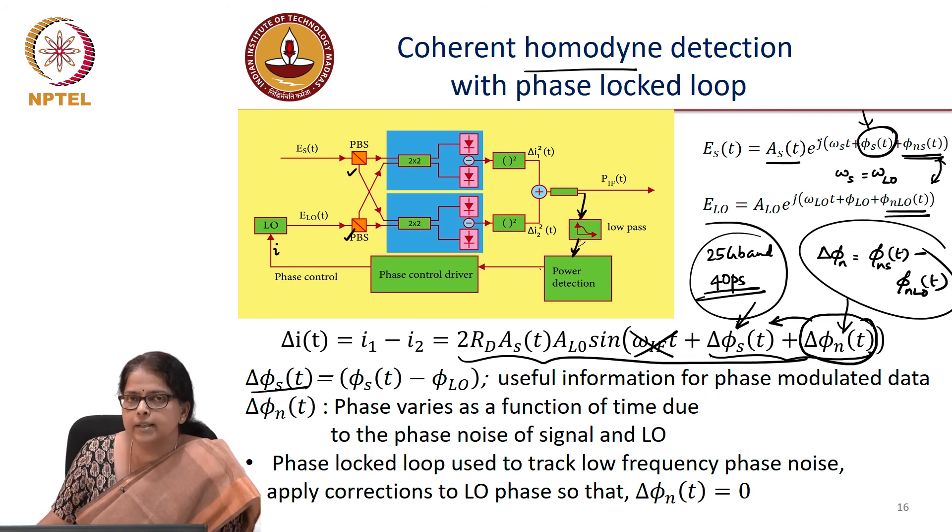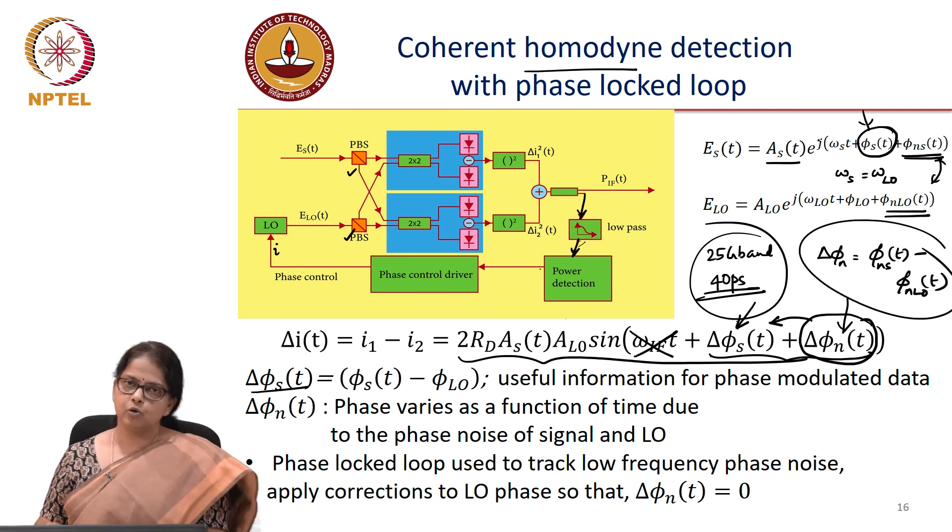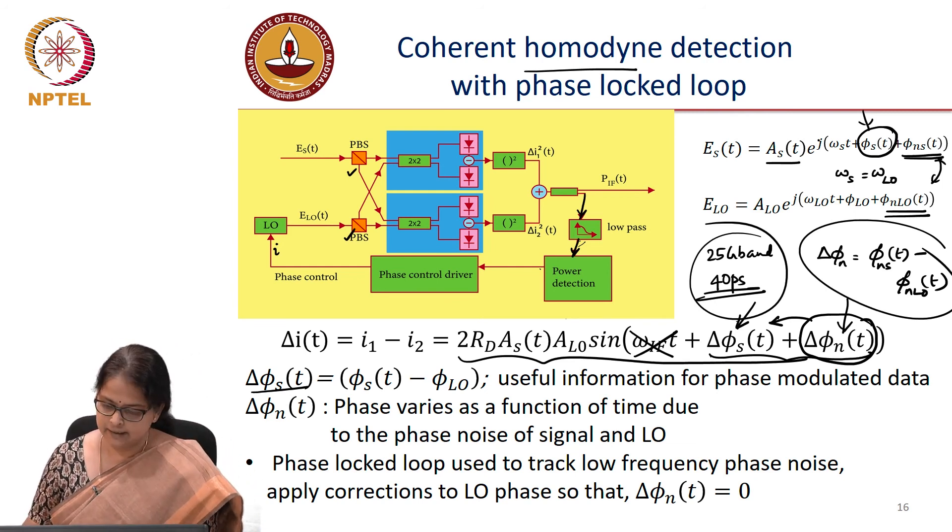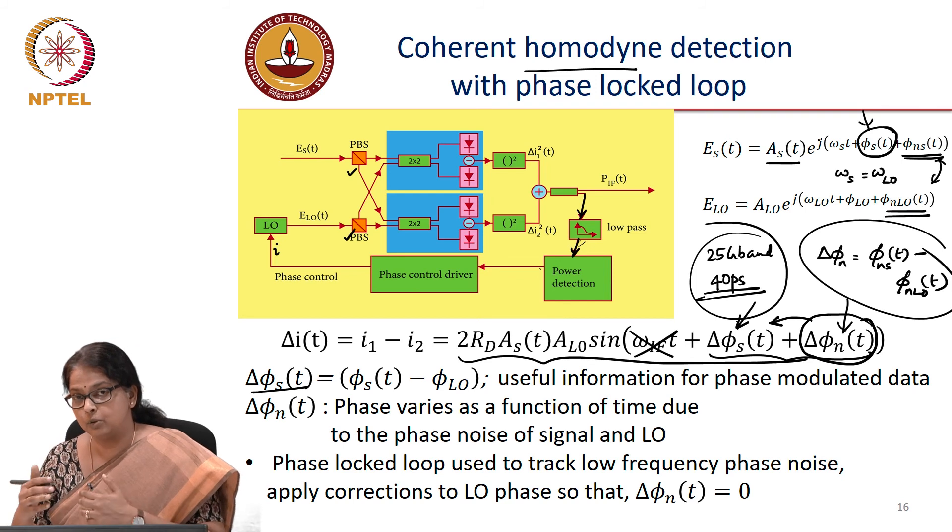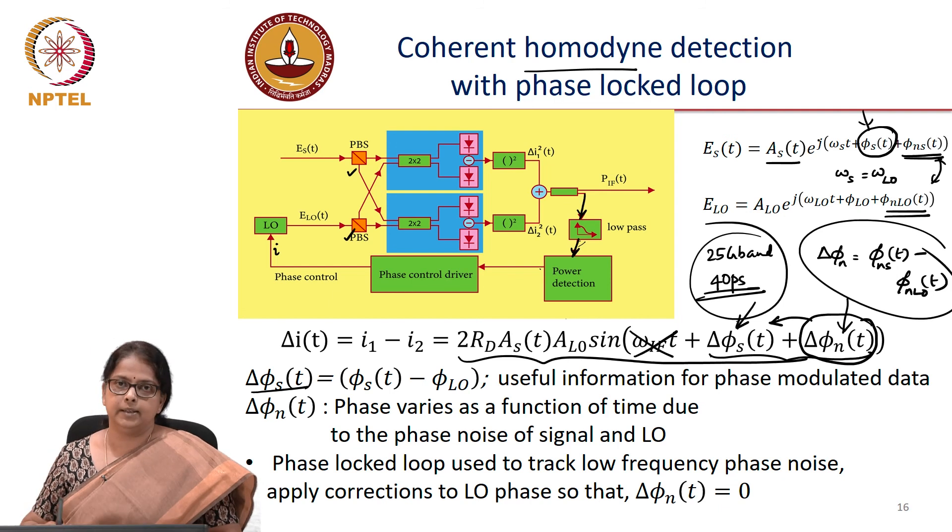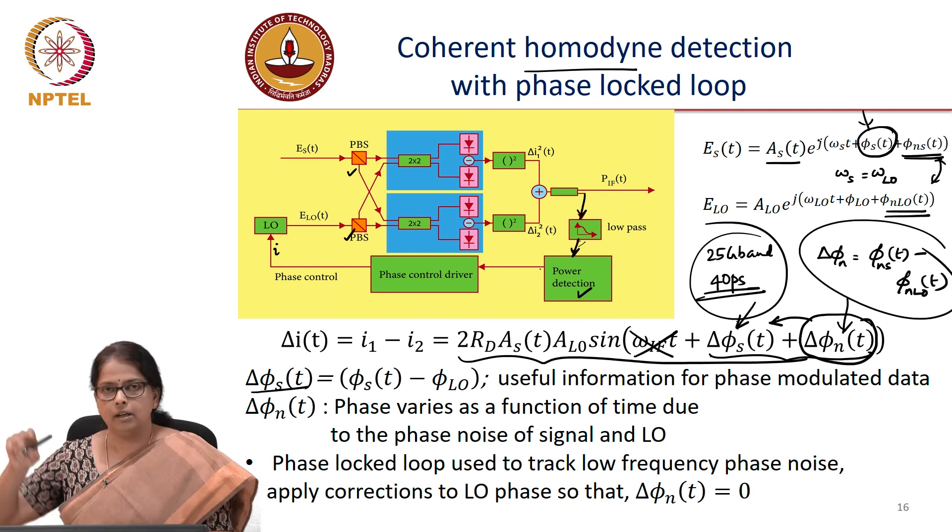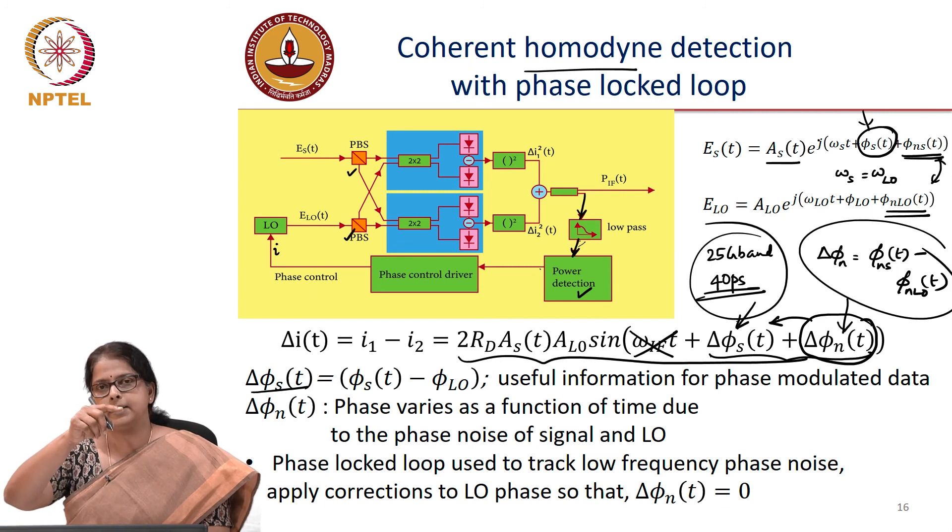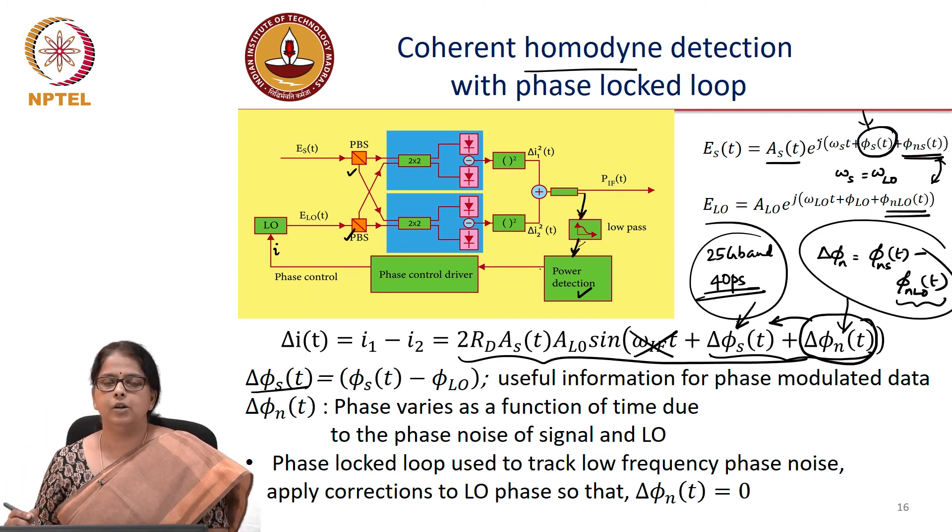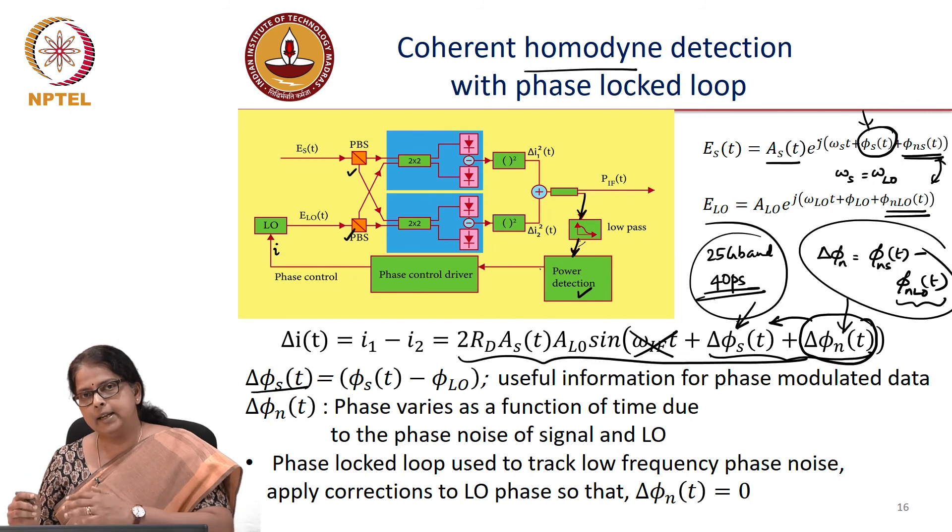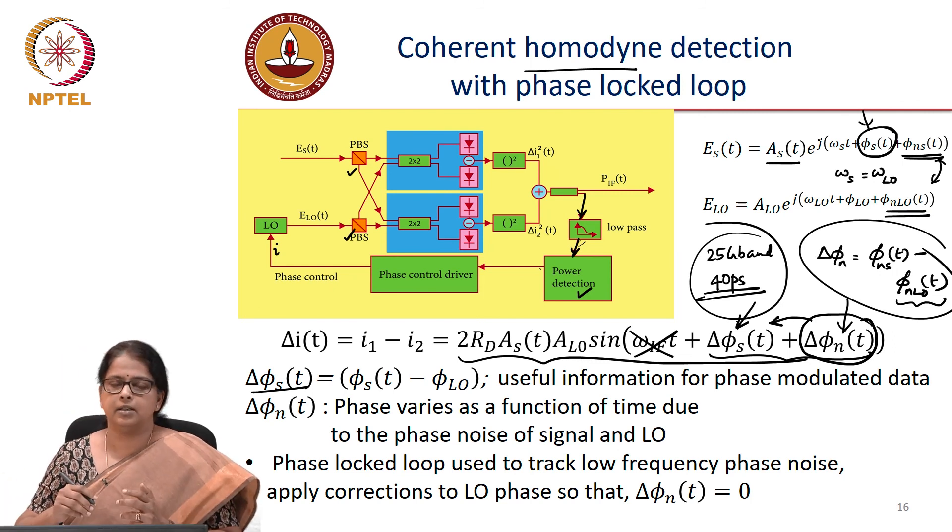So we cannot ignore this delta phi n t because it keeps changing with time and that is spurious, adds spurious noise to your signal phase. So you want to eliminate it. And the way you can think of eliminating it is to low pass filter your output data with the low frequency corresponds to the phase noise of the laser. So you extract that and then you feed it back to the local oscillator as a feedback system and try to control this phi n LO such that this phi n s minus phi n LO is 0.